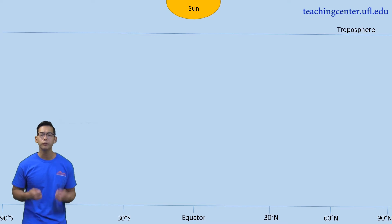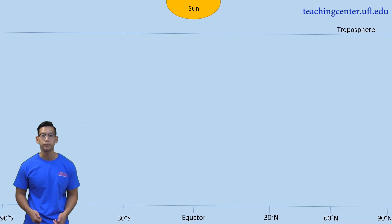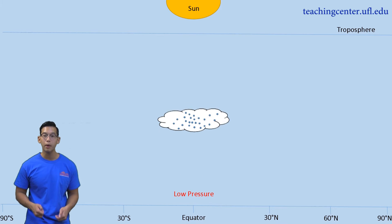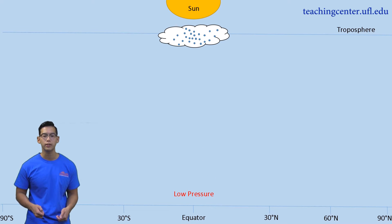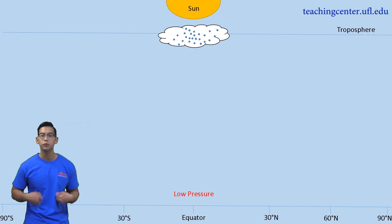Now we'll go over the formation of a Hadley cell. Feel free to pause the video and write down the following steps. We will start at the equator. The equator has the highest amount of solar heating from the sun. This causes hot air, along with moisture, to rise to the troposphere. Remember that warm air is less dense and therefore more likely to rise up. As those air molecules begin to rise, the area they initially occupied becomes vacant and creates an area of low pressure.